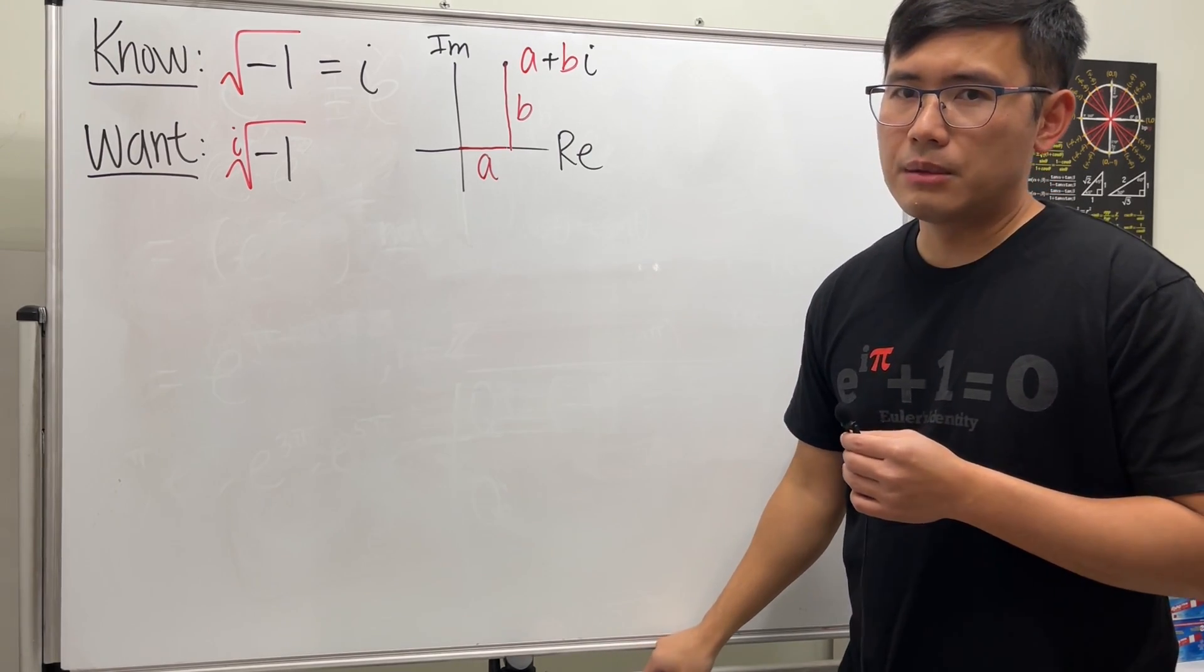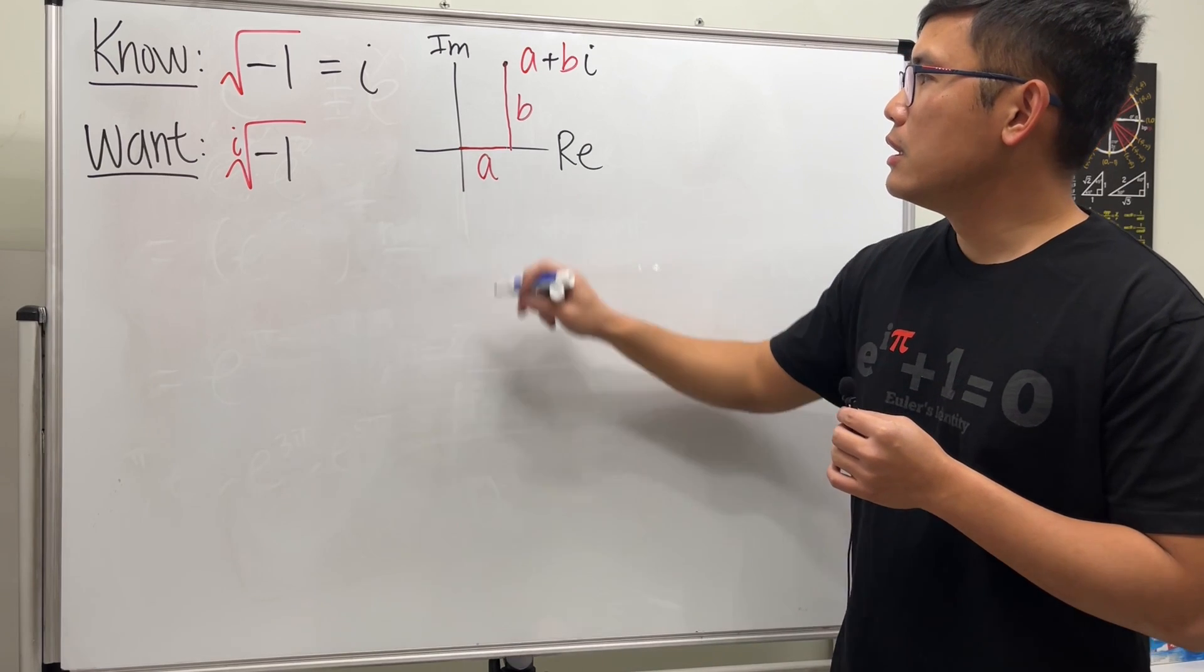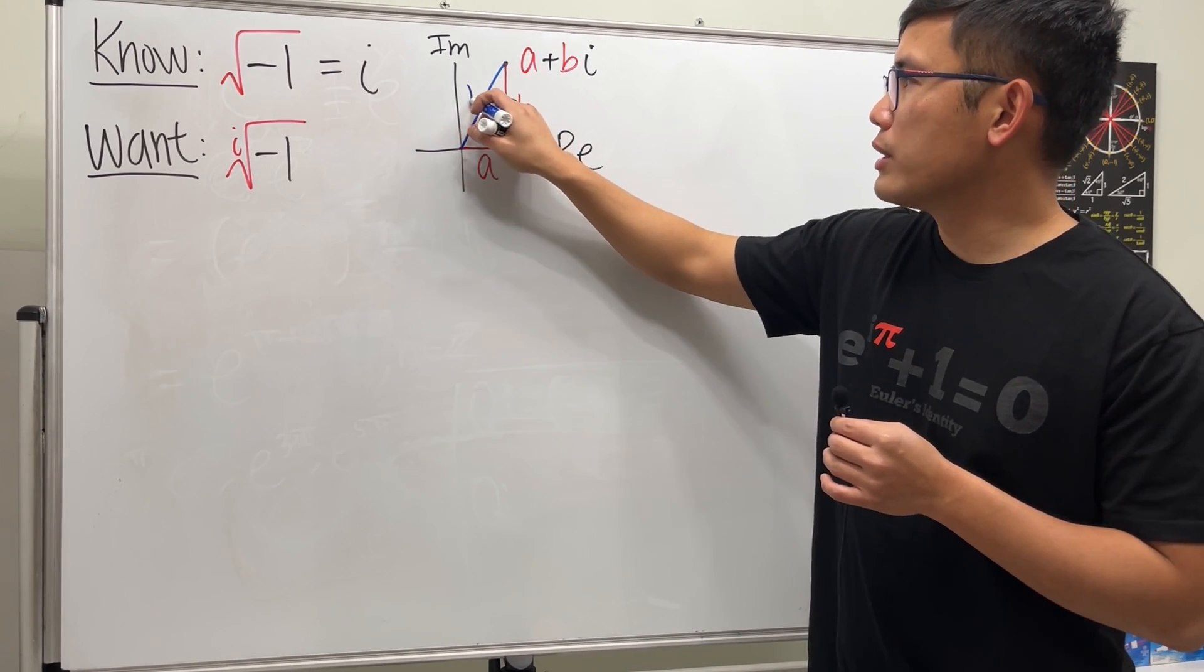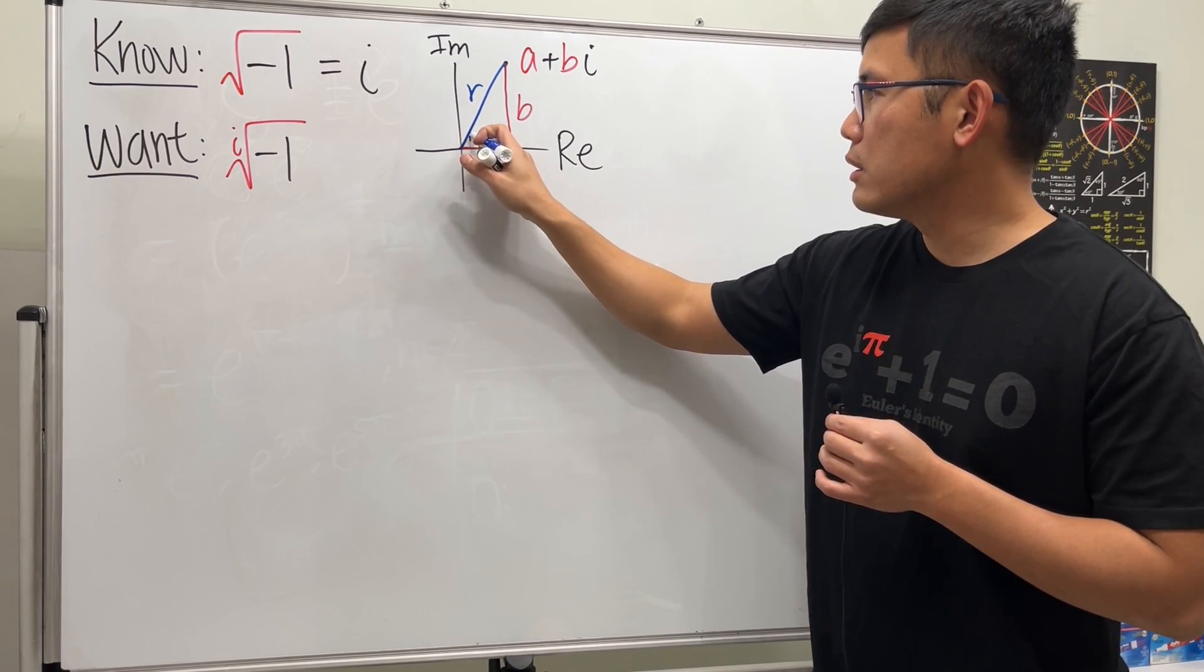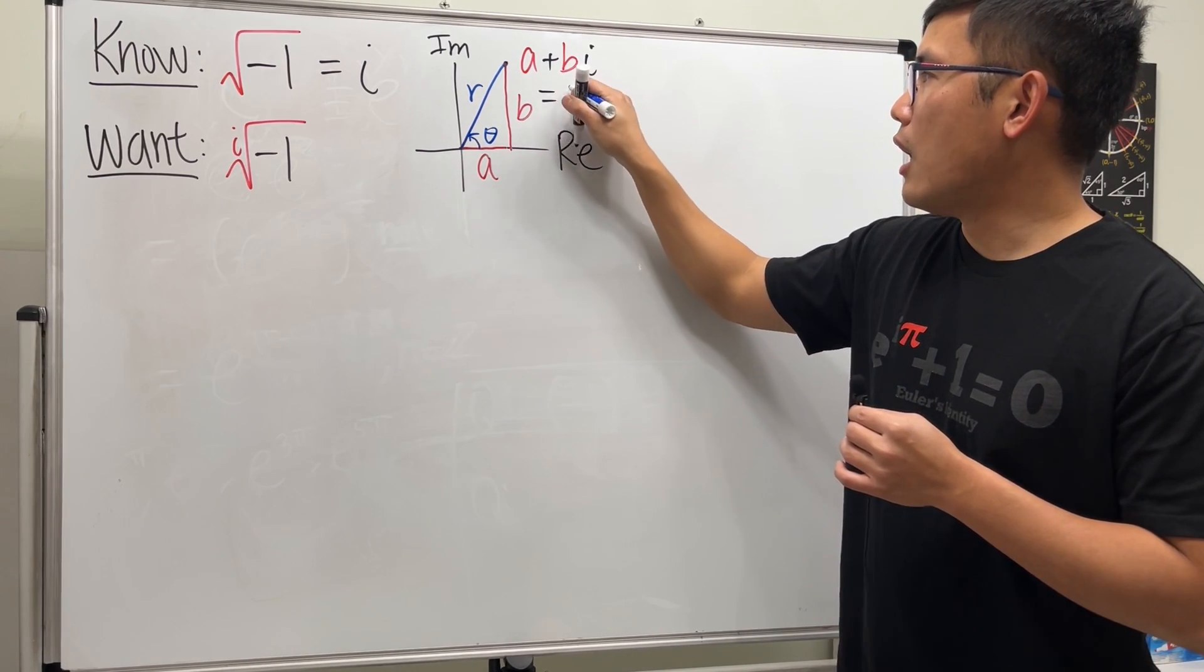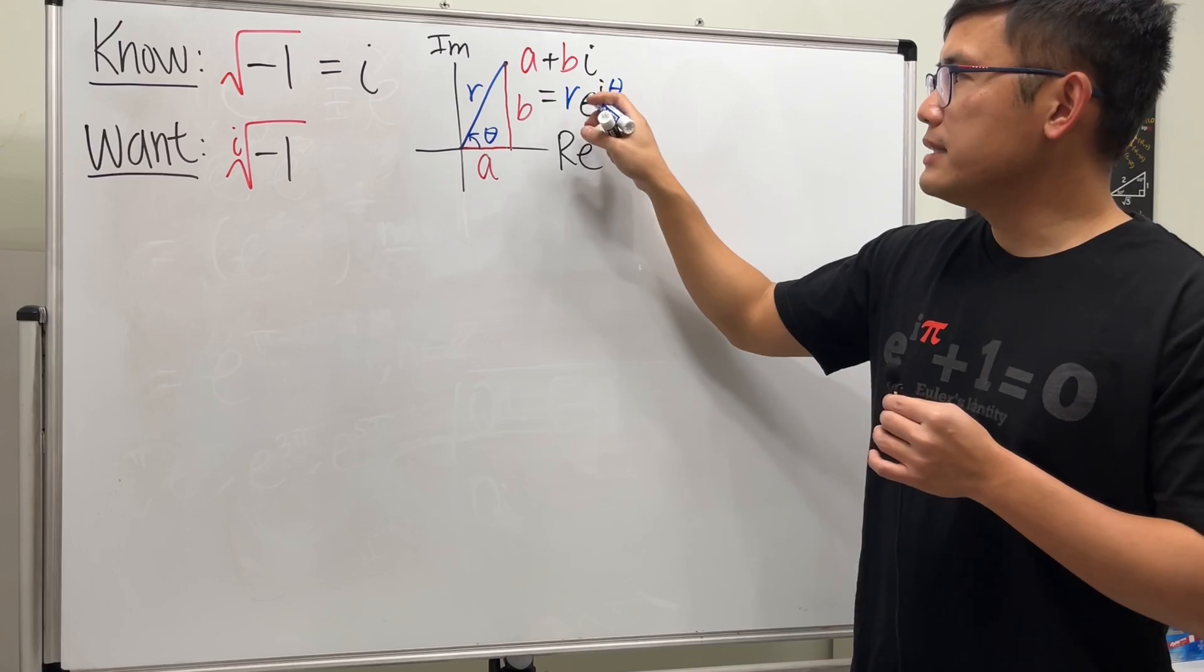But we can actually represent a complex number by using another coordinate system, the polar coordinate. If we know the distance from the origin to the point—that's called r—and if we know the angle from here to here, let's call that theta, then we can write this as r times e to the i theta.